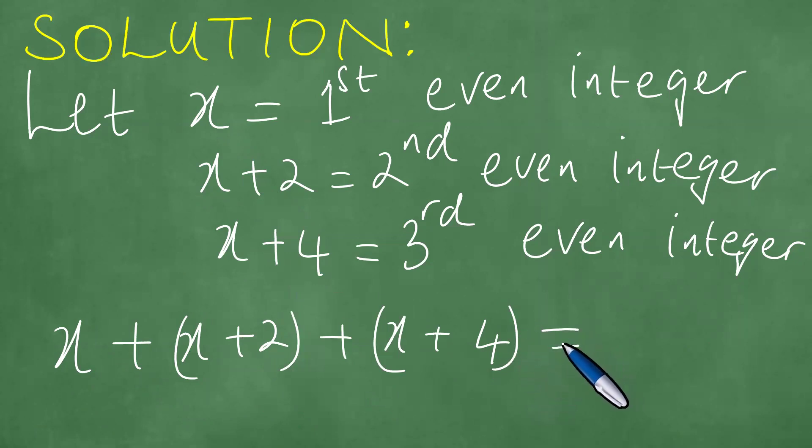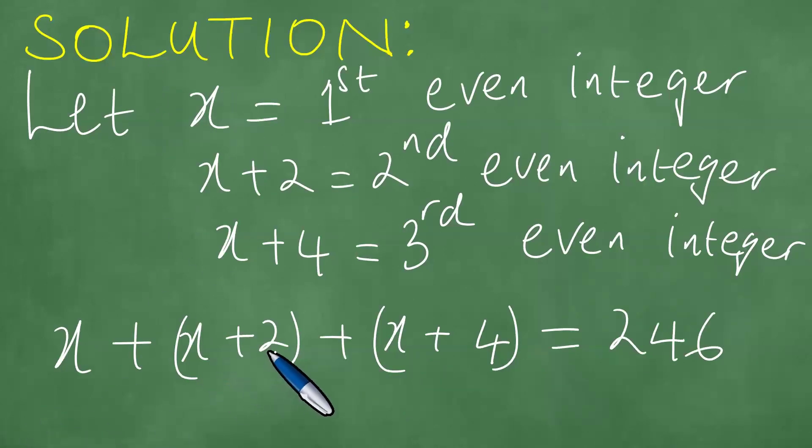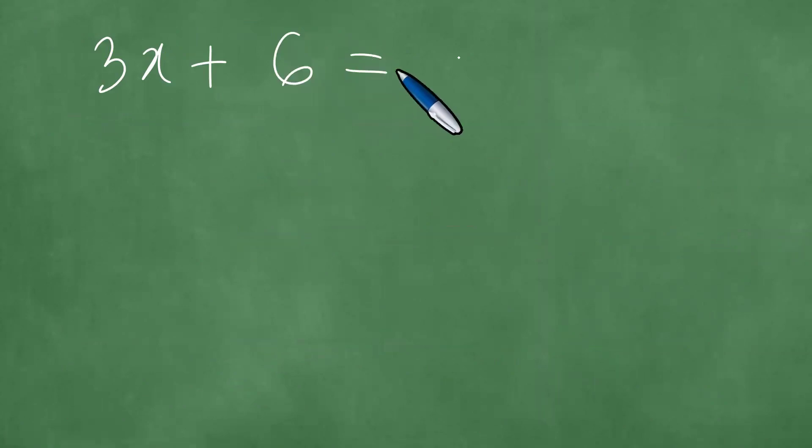And you understand, therefore, that the sum of these integers is 246. x plus x plus x is 3x, so we obtain 3x plus, the 2 plus 4 is 6, equals 246. So 3x plus 6 equals 246.